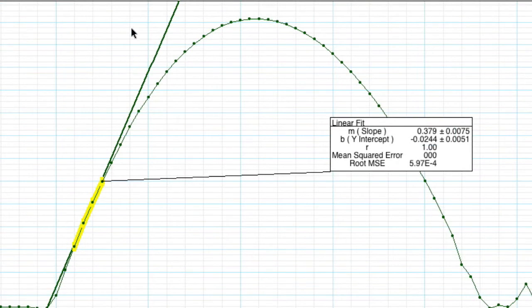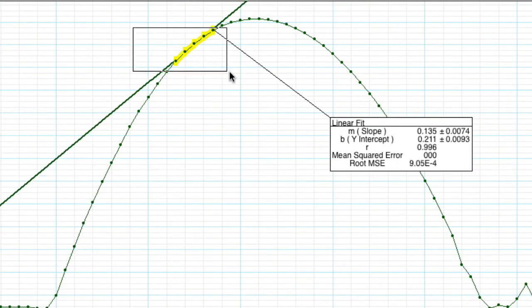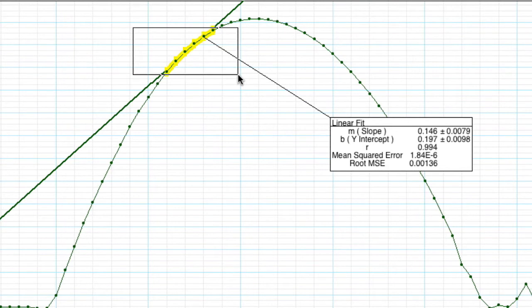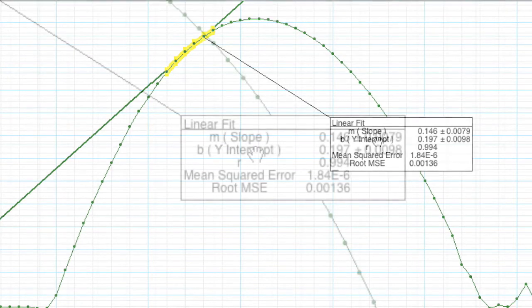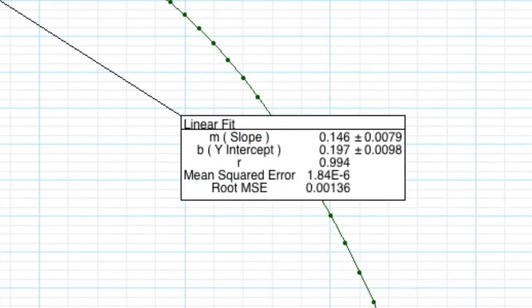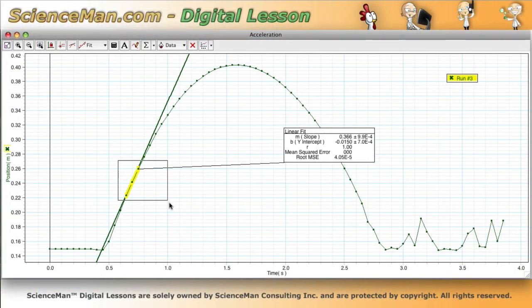Now if we take that same kind of calculation a little bit further up the slope we see that the slope calculation is now 0.146, that's 0.146 meters per second. That's a lot less than our calculation down here.